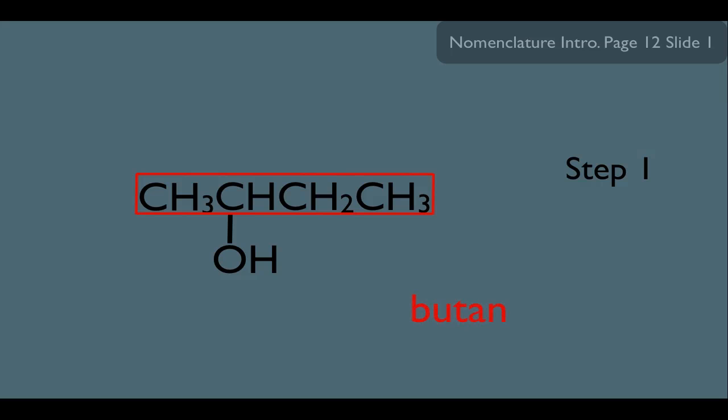So far we have buten, but because this is an alcohol, we change the ending to ol for alcohol. So the parent name of this molecule is butanol. Notice that's how important alcohols are. They actually go into the parent name. They're not merely just substituents.